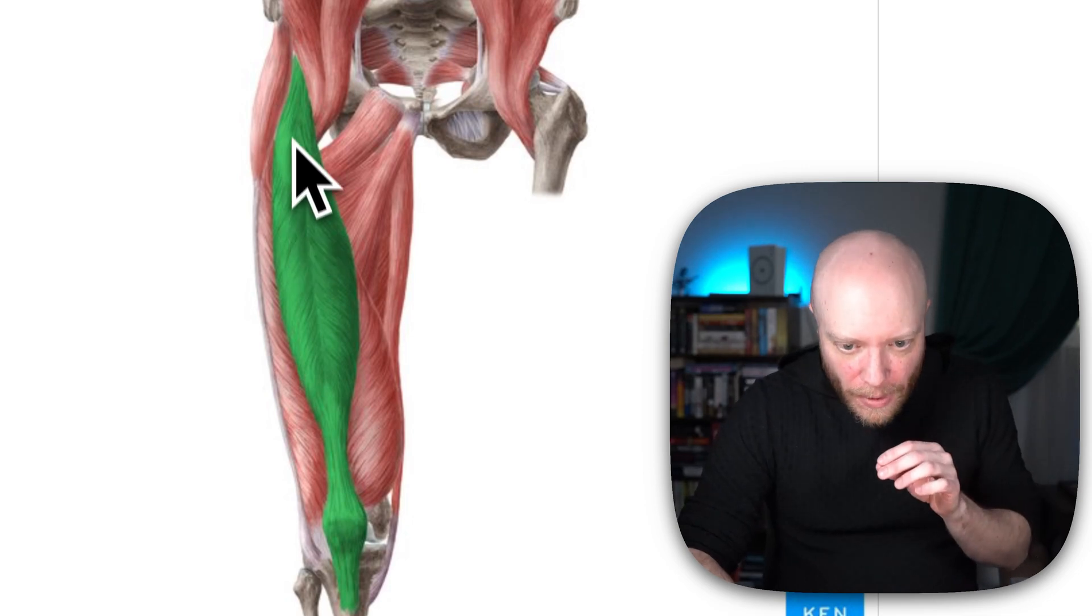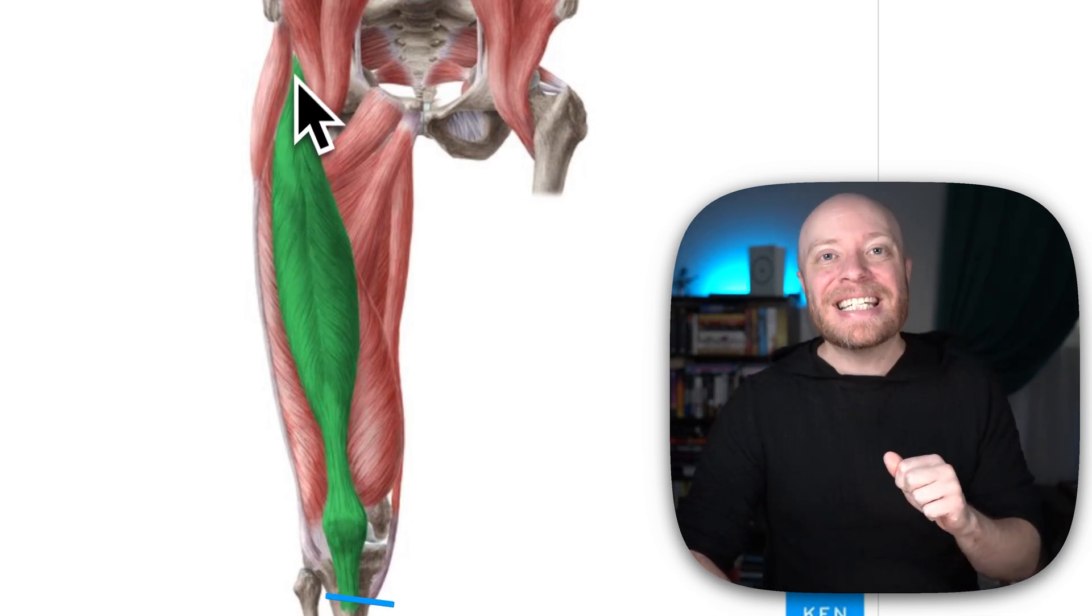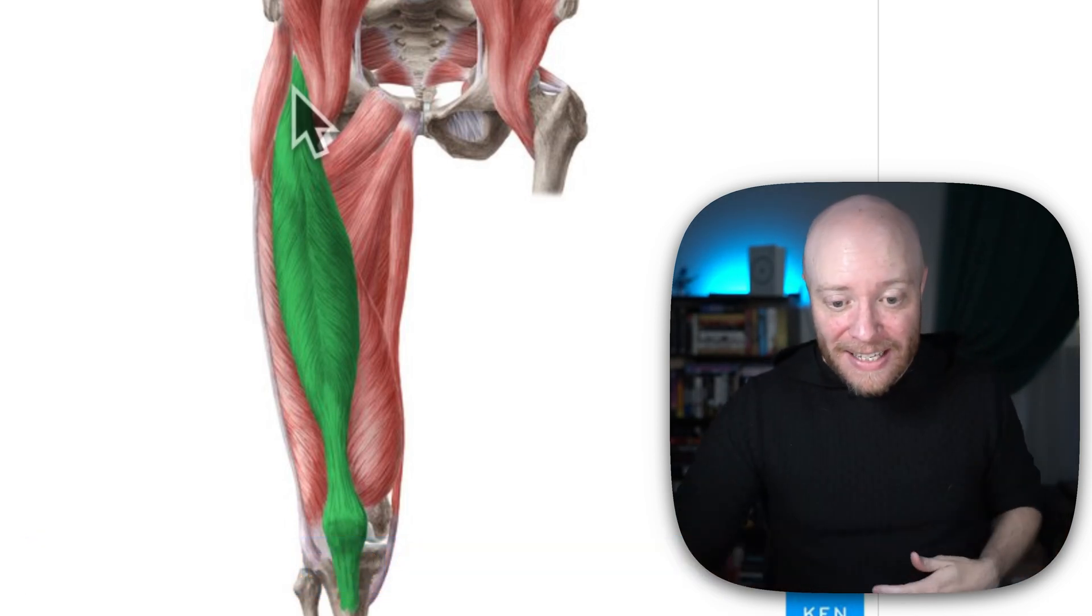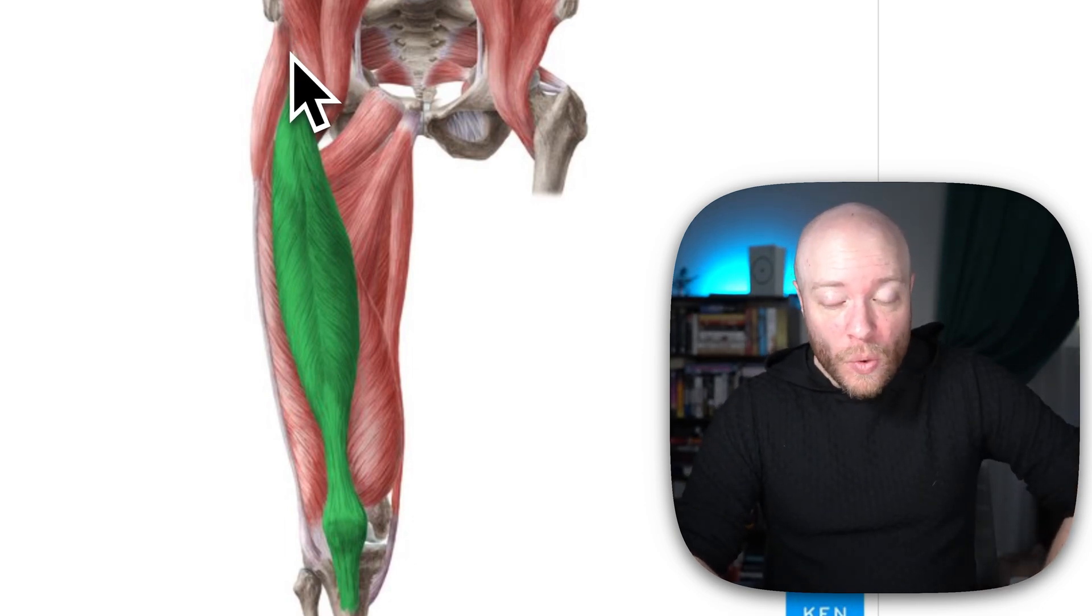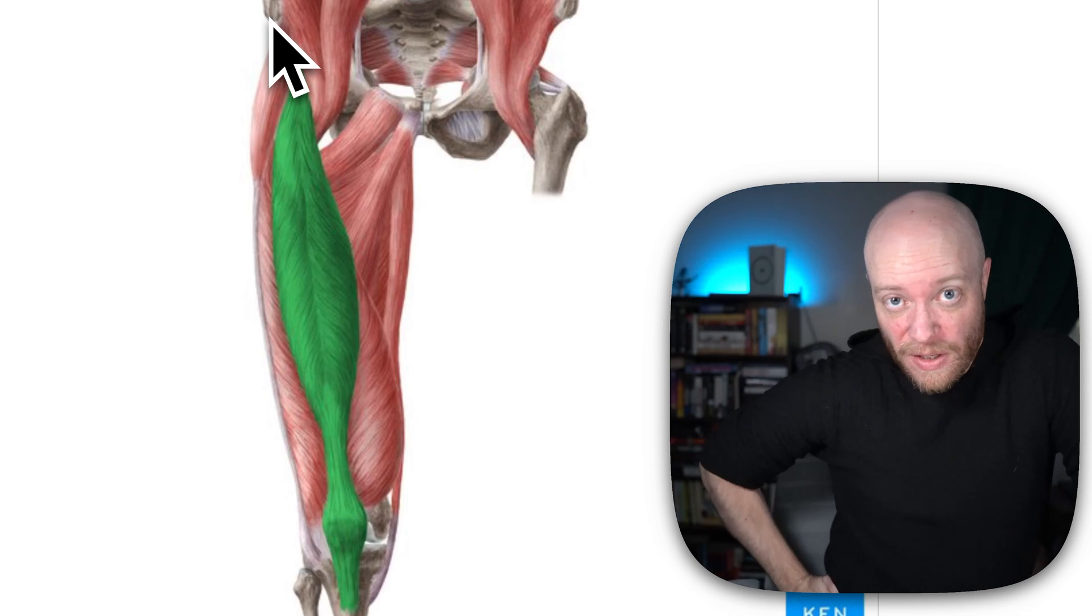So if we go all the way up here, what it's attaching to is an area called the anterior inferior iliac spine, which yes, that is a mouthful. It's just a bump on the os coxa or your hip bone that's right below. You see this bump right here. You can feel this one. It's on you.